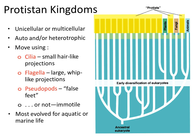They can be either unicellular — one cell big — or multicellular — many cells big. Some are autotrophs, meaning they get their food from the sun themselves, or heterotrophs, meaning they get their food from eating other organisms. Some move using cilia, or small hair-like projections. Some use flagella, using large whip-like projections to move around. Some use pseudopods or false feet to move. And some don't move at all and are considered immotile. I'll show you a couple of famous examples, and then we'll move on, because it's impossible to fully summarize the protistin kingdoms.